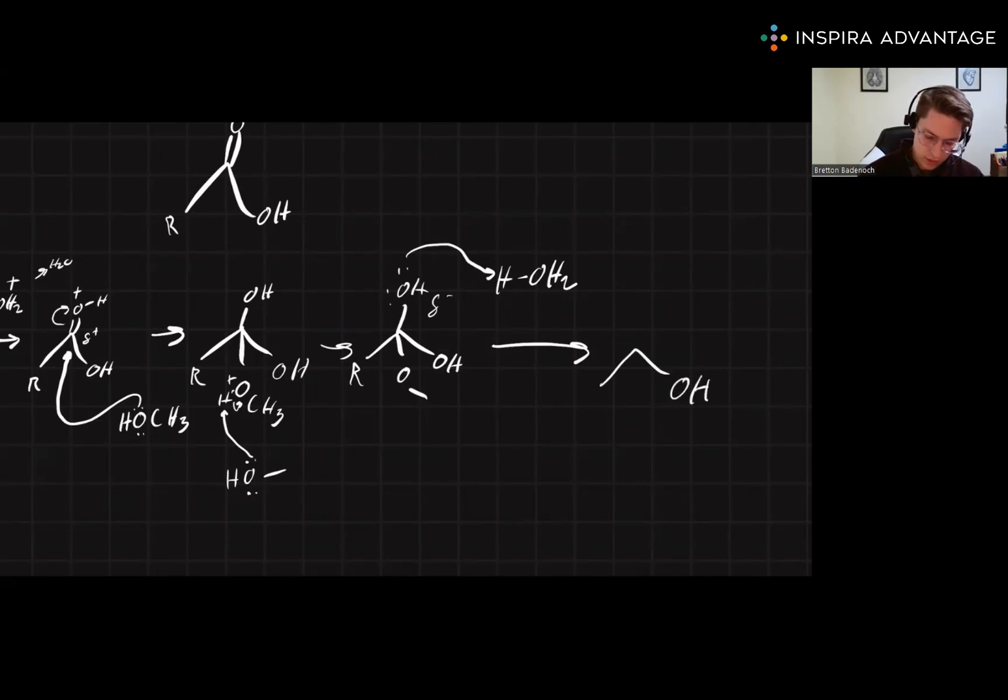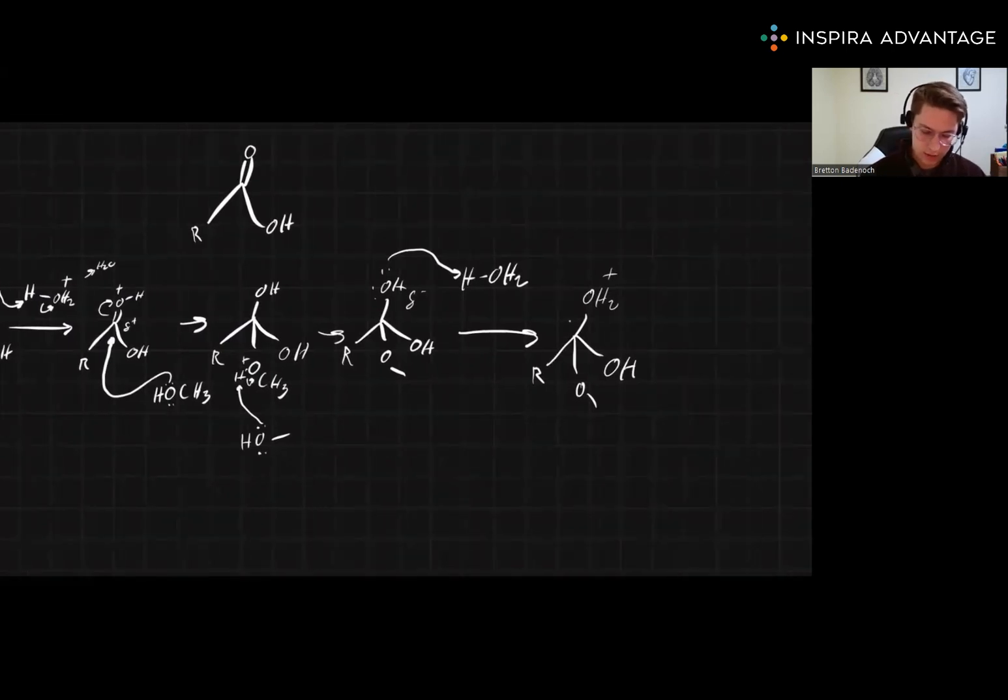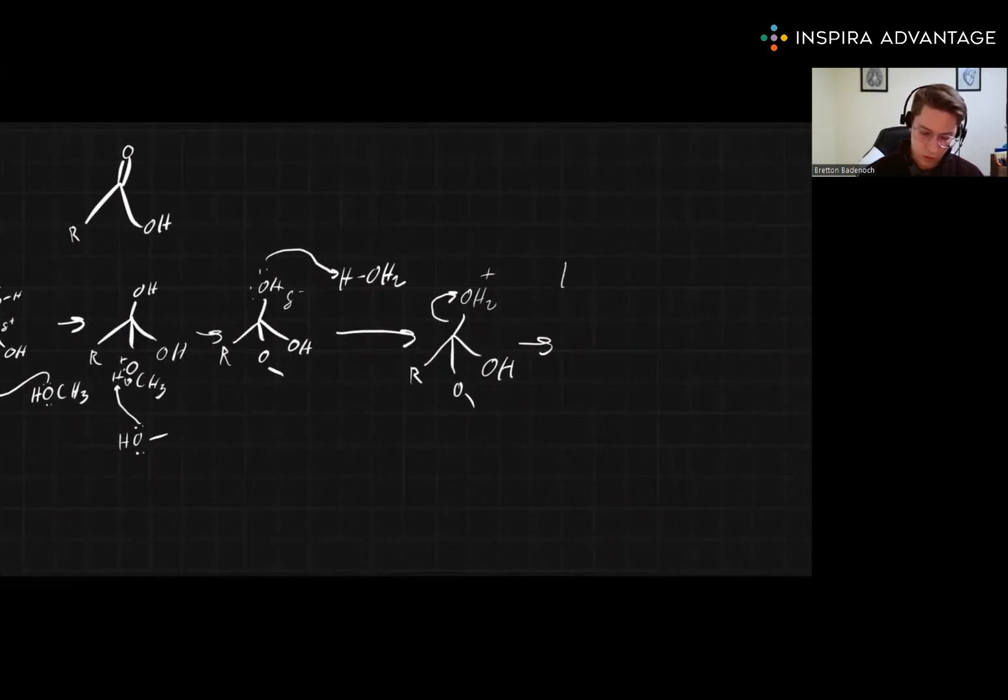So we're going to keep one of those unprotonated. We've still got our alcohol down there. And we now have this really unstable water group on top of our molecule. We can't have this. So the molecule is going to get rid of that by just taking some of these electrons, popping it off, forming water.